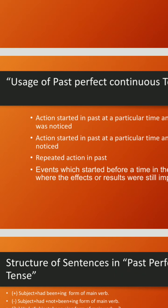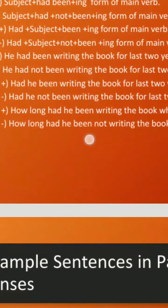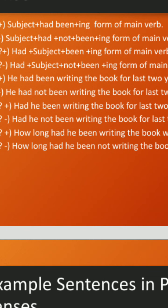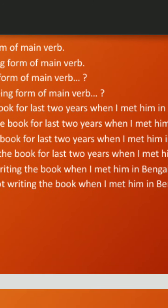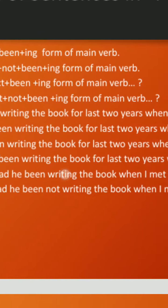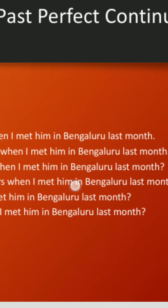First of all, let's learn how to make sentences in past perfect continuous tense. The rule is: subject plus had plus been plus the ing form of the main verb. For example: 'He had been writing the book for last two years when I met him in Bengaluru last month.'